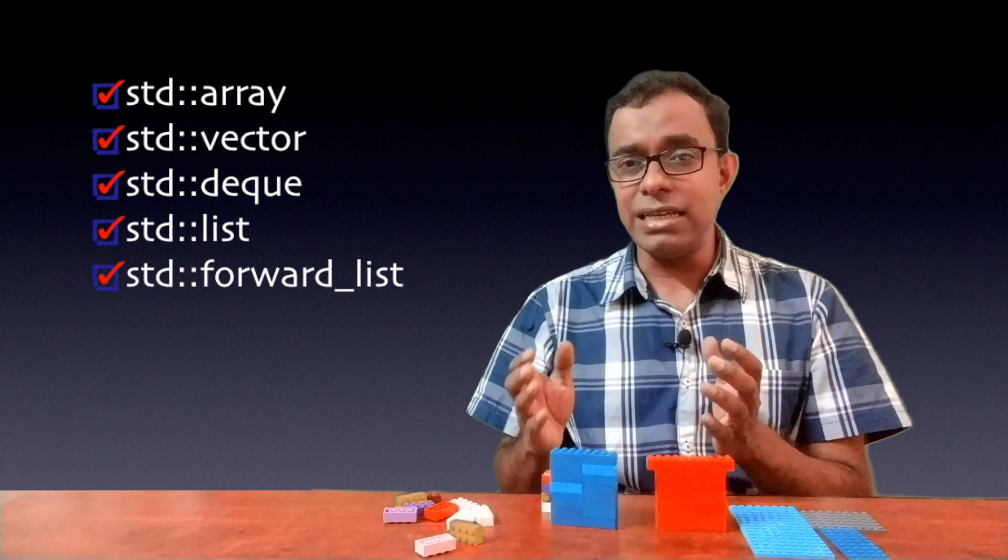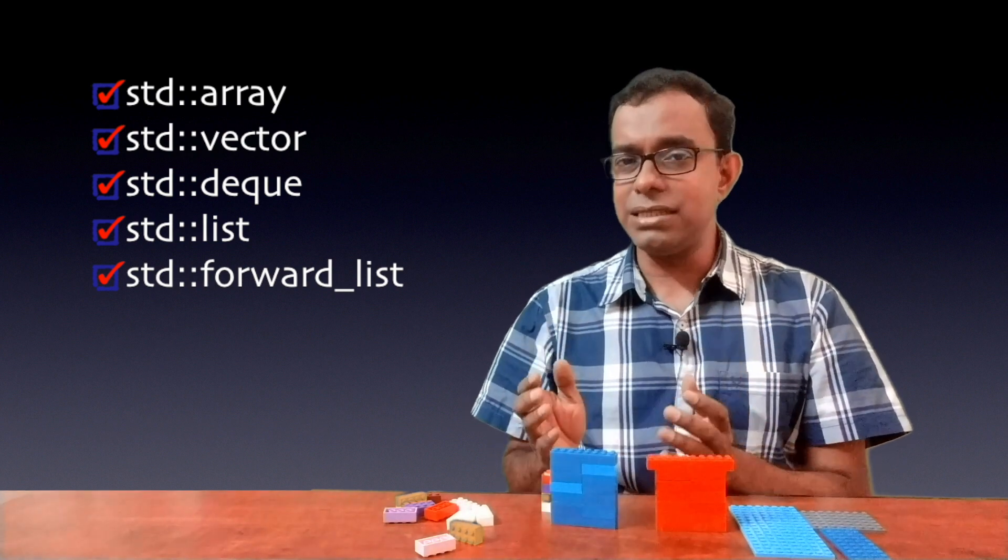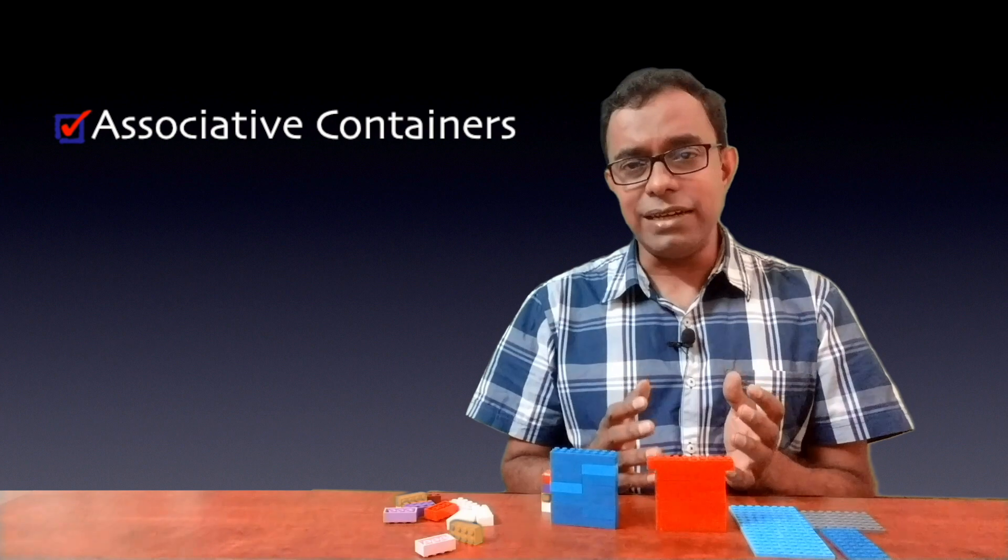Some of the sequence containers are arrays, vector, deque, list and forward list. Now let's talk about associative containers.